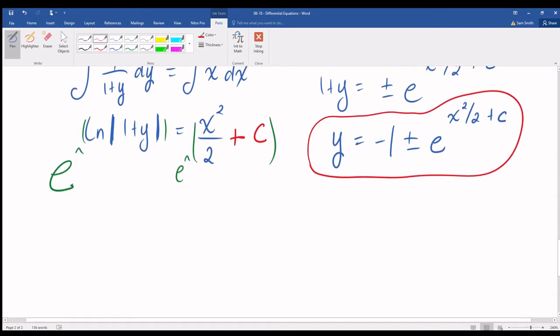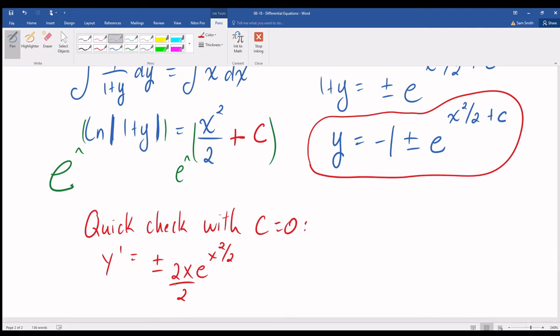So, let's just do a quick test, quick check, with c equals 0, just to make sure that we have done everything correctly. Let's find y prime, the derivative of this function. The negative 1 vanishes and we're left with either plus or minus e to the x squared over 2 times 2x divided by 2 as a result of the chain rule. This 2 and this 2 will cancel.